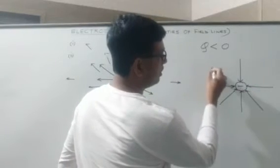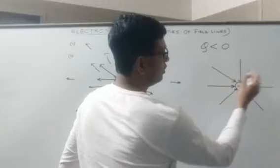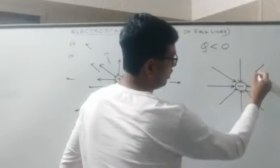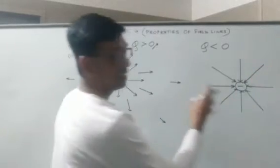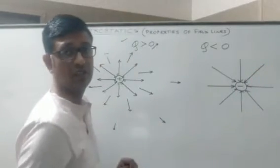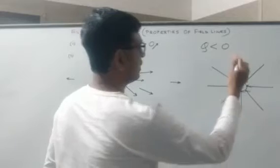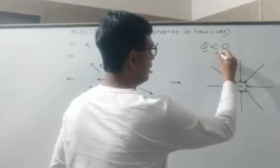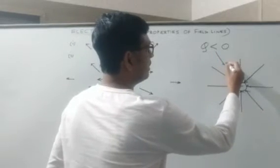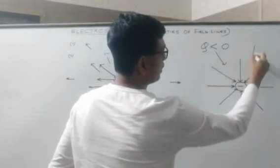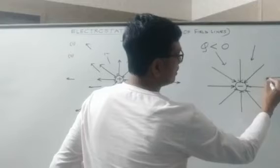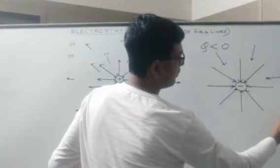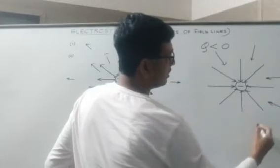Make sure to draw appropriate field lines — it should be spherically symmetrical. In case the observation point is further away, the strength of the electric field will keep on decreasing.